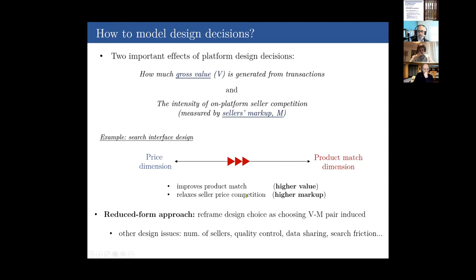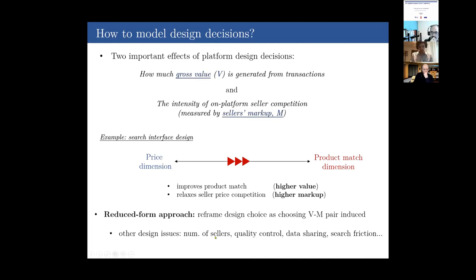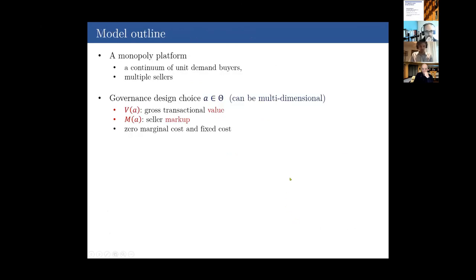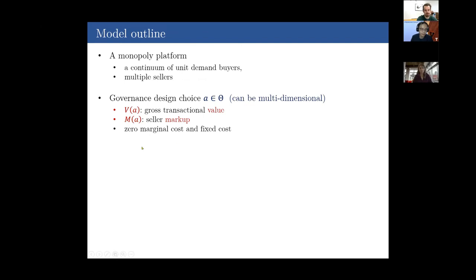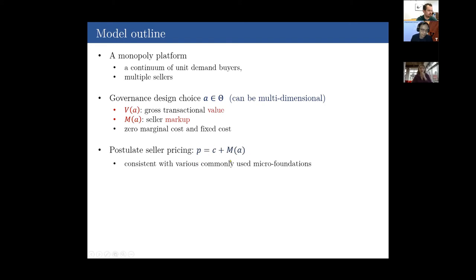Shifting emphasis towards product match will improve the match, raising value from transactions, but also relaxes price competition, raising the markup sellers earn. I take a reduced form modeling approach focusing on how platform design affects this value-markup pair. The platform's choice of design is reframed as choosing this value-markup pair, and the set of feasible pairs depends on the specific design application. This flexible modeling approach encompasses several design issues: number of sellers, quality control, data sharing, search friction, and others.